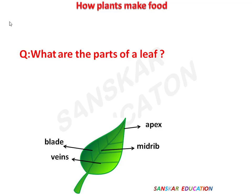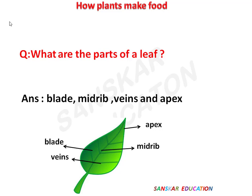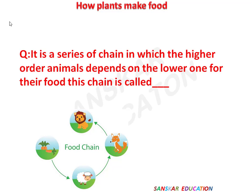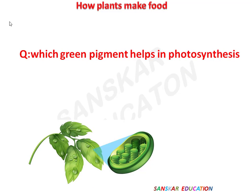What are the parts of a leaf? Blade, midrib, vein, and apex. The food for the plant is prepared by — answer is: leaves. It is a series of chain in which higher-order animals depend on lower ones for their food — this chain is called a food chain. Which green pigment helps in photosynthesis? Chlorophyll.